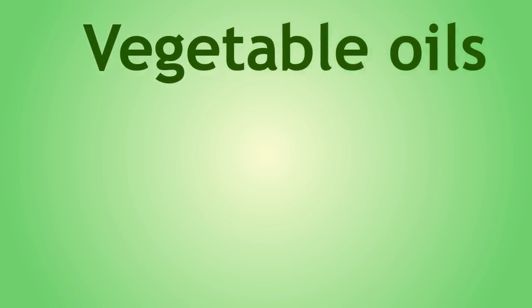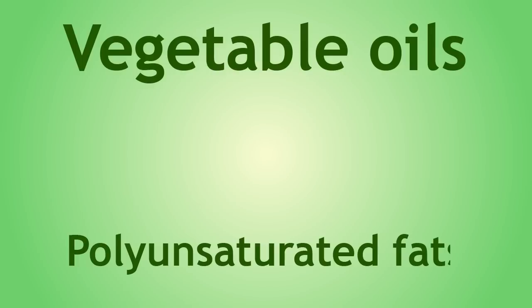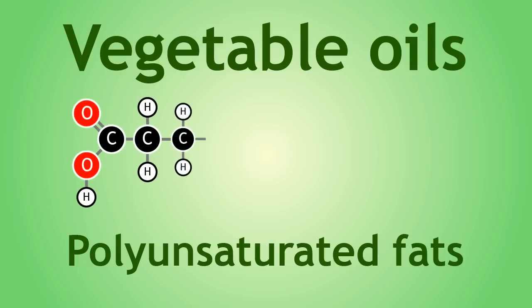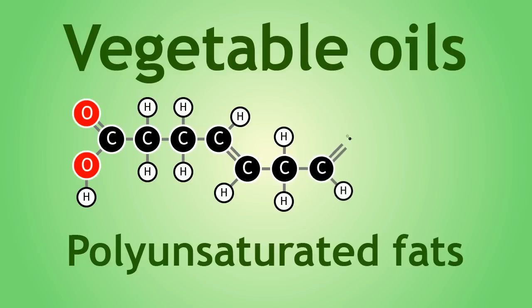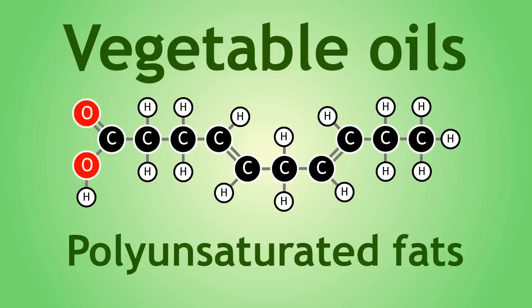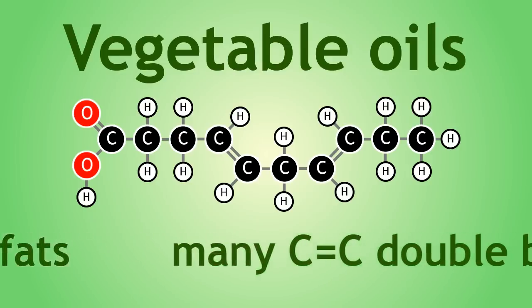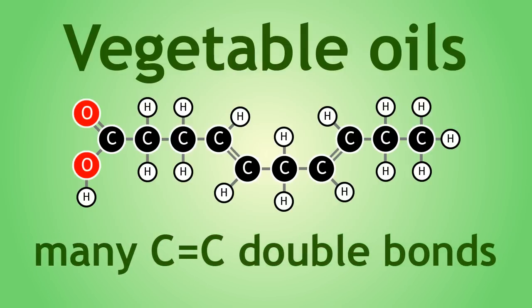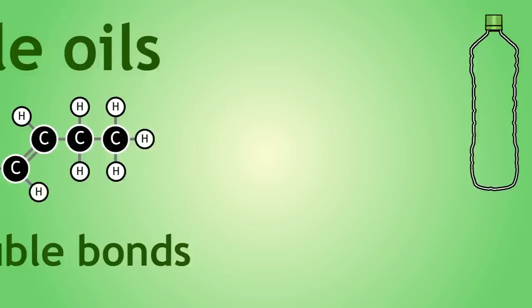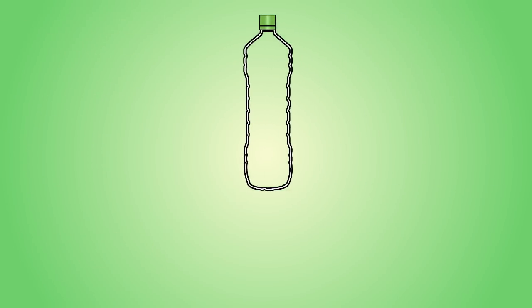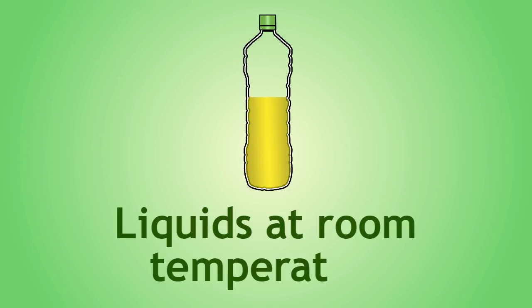Vegetable oils are polyunsaturated fats. You may be familiar with the term unsaturated to describe the presence of carbon-carbon double bonds within a hydrocarbon structure. So a polyunsaturated fat will have many carbon-carbon double bonds within its structure. These fats are normally liquids at room temperature.